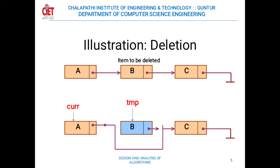This illustration explains how to delete an element. Before deletion, the list has elements A, B, and C. We want to delete element B from the list. We delete element B by pointer exchange — element A's next pointer is changed to point to C instead of B. By doing this, element B is removed from the list. Before removal, B pointed to C; after removal, A points directly to C.